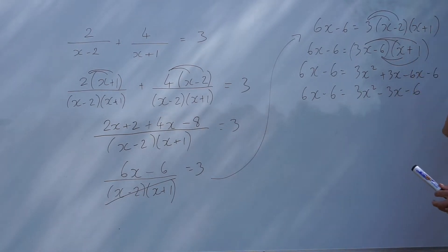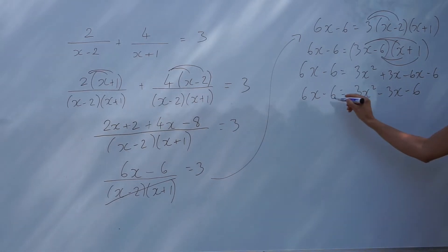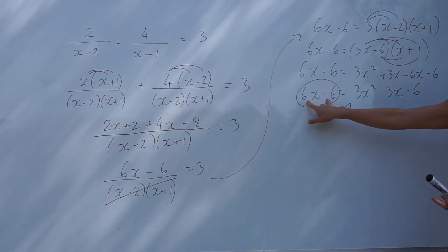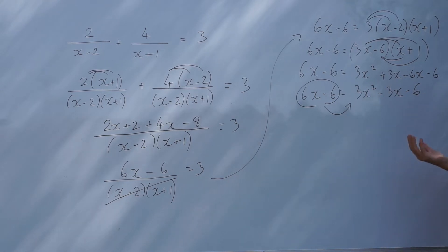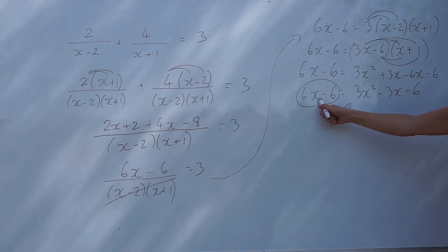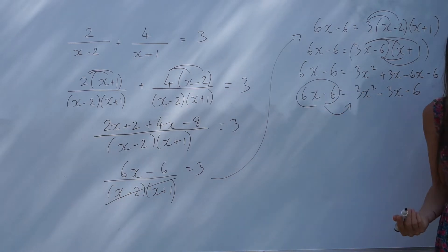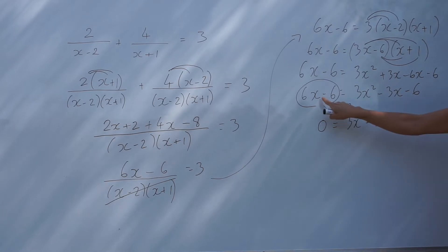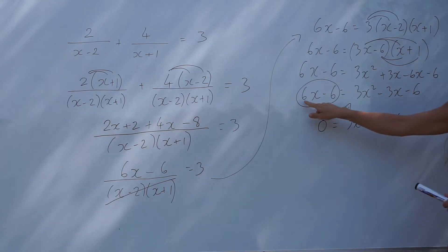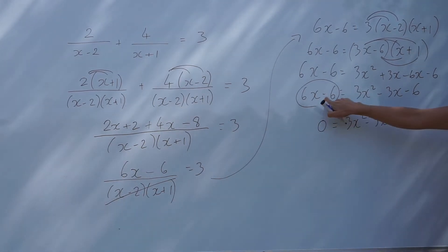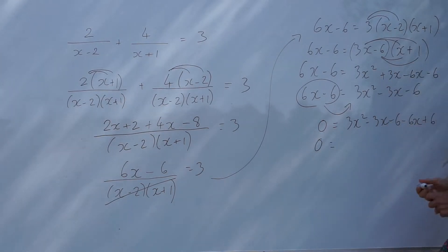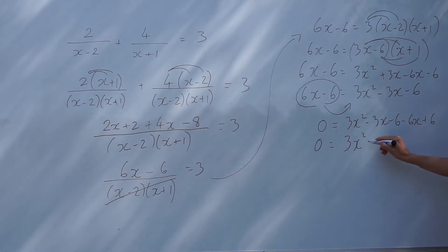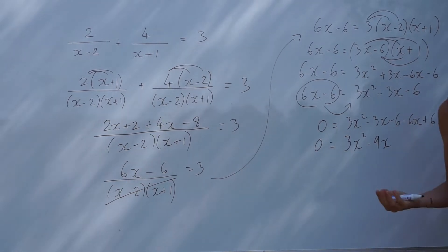We're almost finished. We want to put all the terms on one side of the equation so it equals 0. I'm going to move those two terms over to the right-hand side — there are only two terms there, and it keeps the x squared term positive, which is easier to deal with. When these terms move across the equal sign, they change sign. So the positive 6x changes to a negative, and the negative 6 changes to a positive.